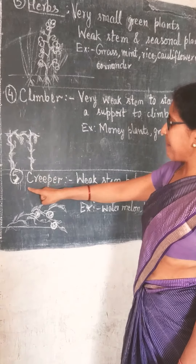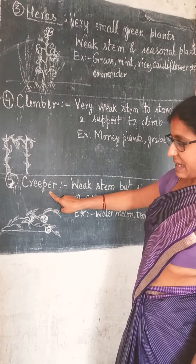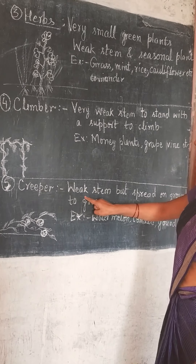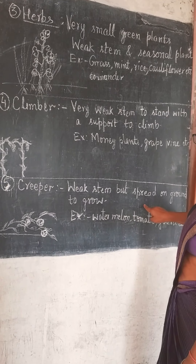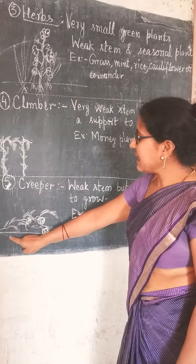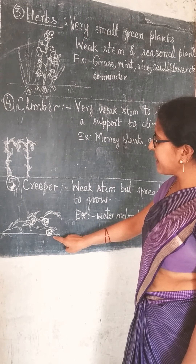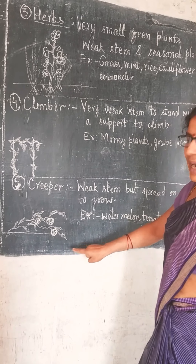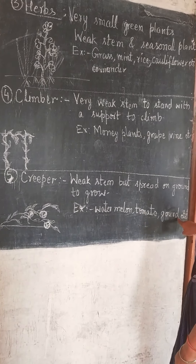And the fifth type is Creeper. Creepers spread on the ground. Creeper's stem is weak, but they spread around and grow along the ground surface. As you can see, there is a watermelon plant which spreads on the ground. For example - watermelon, tomato, gourd, etc.